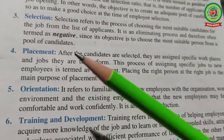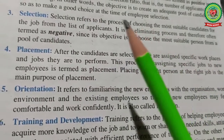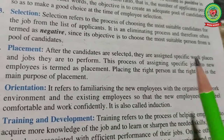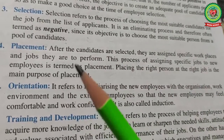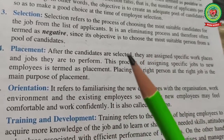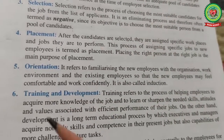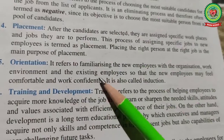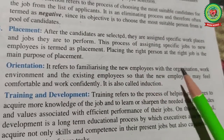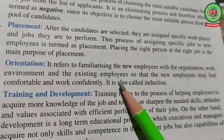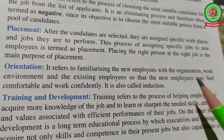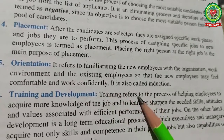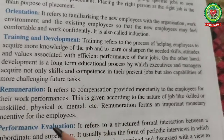Placement means assigning jobs to selected candidates. After candidates are selected, they are assigned specific workplaces and jobs to perform. This process of assigning a specific job to new employees is termed placement. Placing the right person at the right job is the main purpose of placement. Orientation means providing guidelines to new employees about the organization's work environment and existing employees so that new employees feel comfortable and work confidently. It is also called induction.